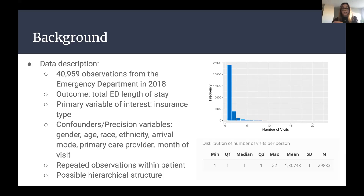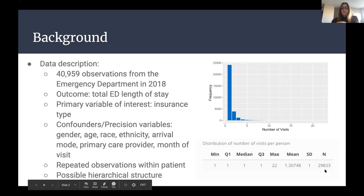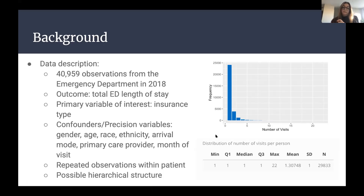I considered a hierarchical structure: insurance type at the top level, patients nested within insurance type, and repeated observations nested within patient. Looking at table one, there seems to be a fairly even distribution of length of stay once log-transformed. Medicare and private insurance individuals have longer ranges of length of stay than self-paying individuals. VA and Medicare patients also have higher age ranges, which makes sense.